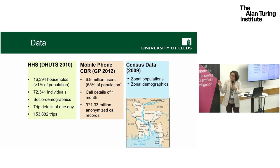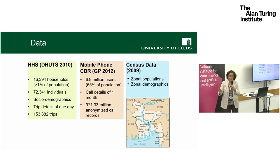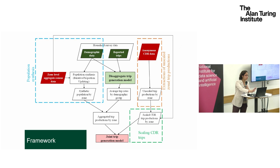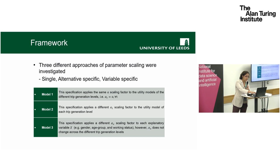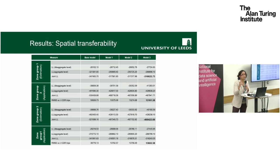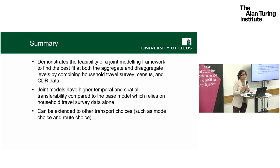In the third case study, we combined household survey data with mobile phone data using data from Bangladesh. We used population synthesis to expand the household survey data, then performed a joint optimization that tried to match both mobile phone patterns and survey patterns. We found that models using both sources of data were more spatially and temporally transferable.